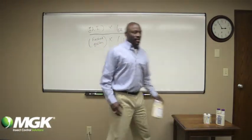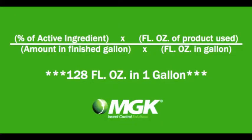The first thing you'll need to know, if you look at the formula, you've got percent AI, ounces of product that you're going to use, finished gallon, and 128, which is 128 ounces in a gallon.